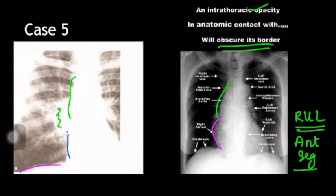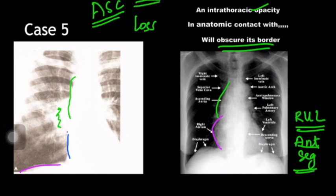I again urge you all to go back and review the segmental anatomy — how the lung is divided into lobes and further into segments, and how you can identify the segments on chest radiograph. By applying the Silhouette sign, that is the loss of Silhouette sign, any lesion obscuring the ascending aorta can be localized to the right upper lobe, to be specific, the anterior segment.